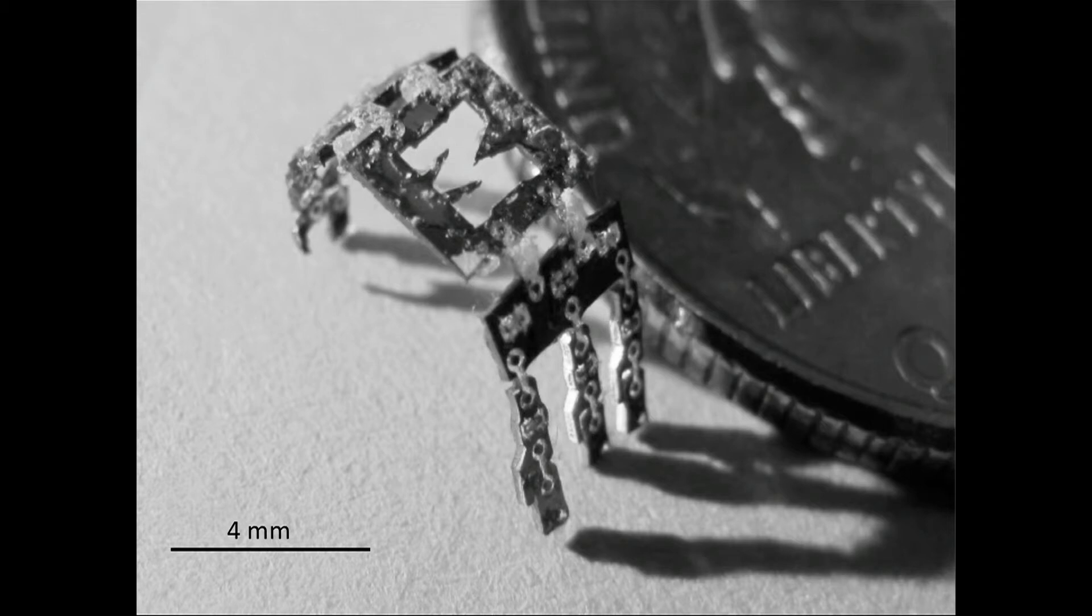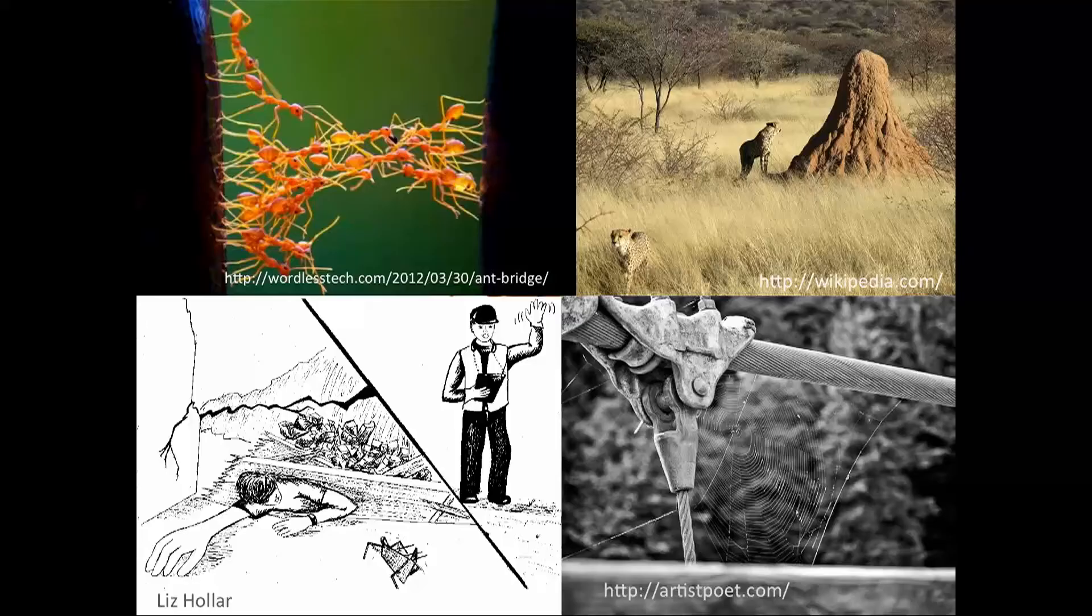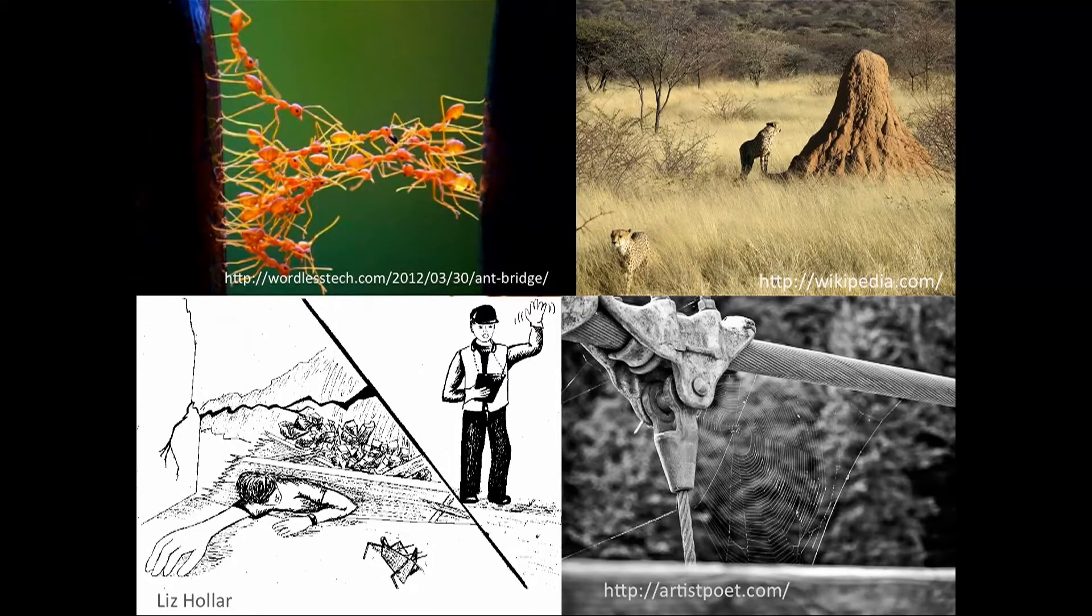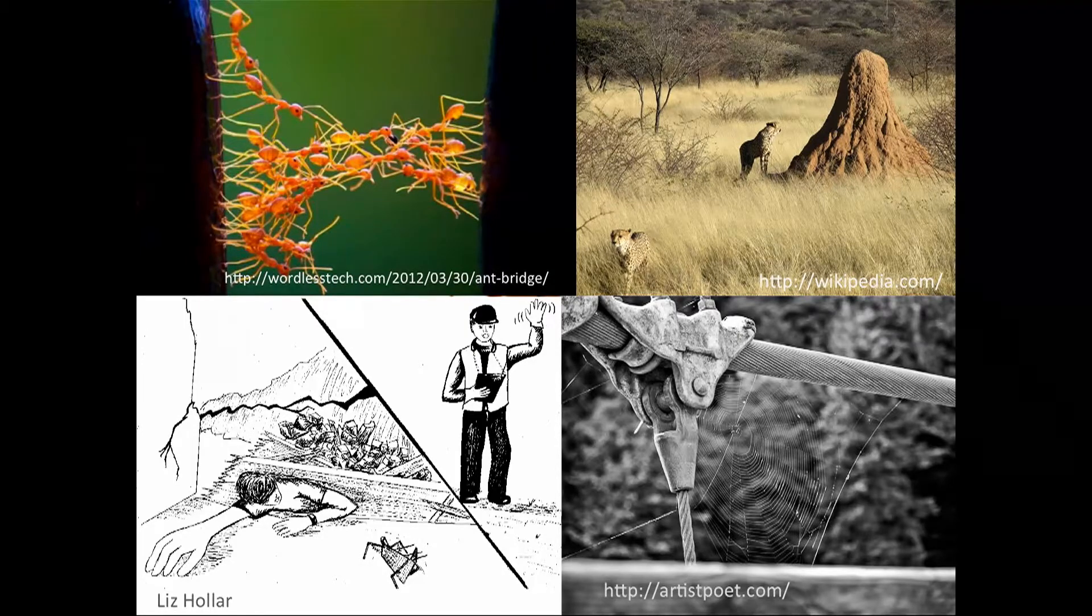But these things can do some fascinating things. We have some amazing existence proofs in biology of what these insects can do. Ants can build bridges out of themselves for other ants. Really incredible stuff. You've all seen ants carry Cheerios or potato chips off of your picnic table, much to your chagrin.